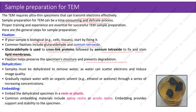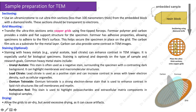Dehydration: samples must be dehydrated to remove water, as water can scatter electrons and reduce image quality. Gradually replace water with an organic solvent such as ethanol or acetone through a series of increasing concentrations. Embedding: embed the dehydrated samples in a resin or plastic; common embedding materials include epoxy resins or acrylic resins. Embedding provides support and stability to the specimen. Sectioning: use an ultra-microtome with a diamond knife to cut ultra-thin sections less than 100 nm thick from the embedded block. These sections should be transparent to electrons.